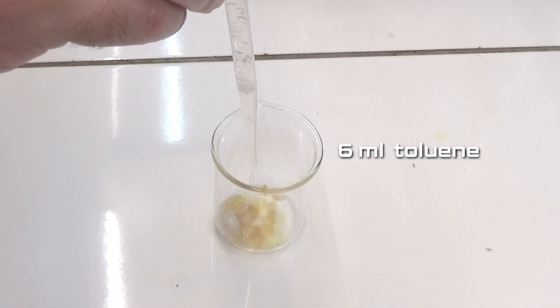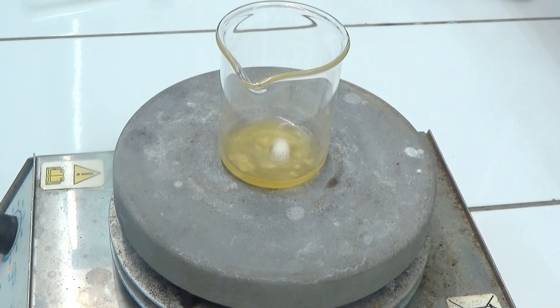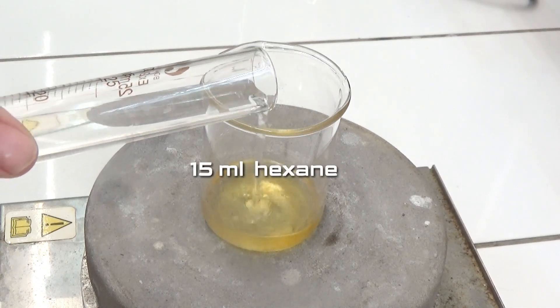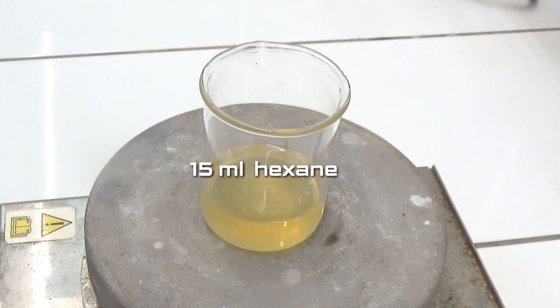Dilute the crystals with 6ml of toluene, heat slightly until total dissolution. Let cool and add 15ml of hexane and leave in the refrigerator one day at 0 degrees to crystallize.